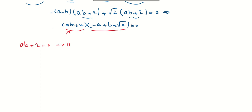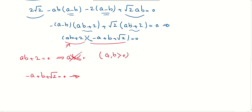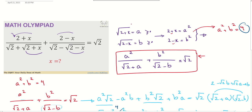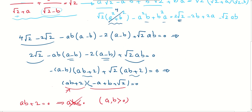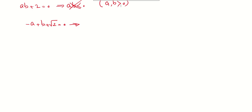Now we have two factors equal to zero. For the first case, ab+2=0 means ab is negative. But remember a and b are both non-negative, so their product cannot be negative — this case is not acceptable. The only acceptable case is √2 − (a−b) = 0, meaning −a + b + √2 = 0. Substituting back, with a=√(2+x) and b=√(2−x), we get −√(2+x) + √(2−x) + √2 = 0.